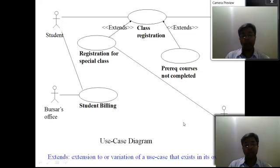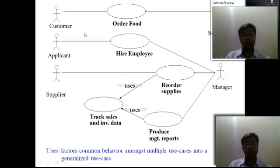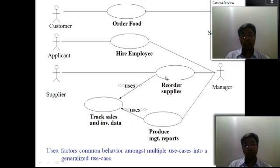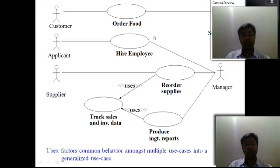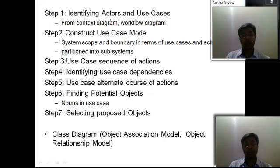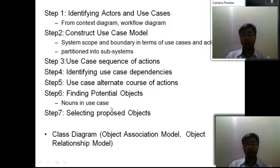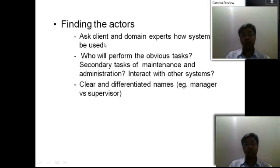In the use case model we have at least three to four processes. Examples include: customer order, applicant, hire employee — all use cases are active verbs and all actors are nouns. Step one when designing a use case model is to find actors and use cases clearly, then construct the model, write the use case description with the sequence of actions, and identify use case dependencies, since one use case may depend on another. Ultimately the use case transforms into your object model.